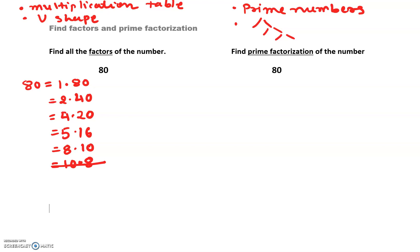Sometimes — for instance with 36 — if you have 6 times 6, when both numbers are exactly the same, that is also your stopping point. Now we're going to make a U-shape using any color you like, and I'm going to start writing my factors from the upper left corner going down.